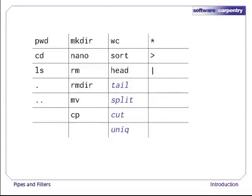We've also met three more special characters: the pattern-matching wildcard star, redirection with greater-than, and most important of all, the pipe, which allows us to connect processes together. Again, once this episode is over, please take a moment to find out what two other characters do: less-than, which redirects input, and question mark, a wildcard that matches a single character instead of any number.